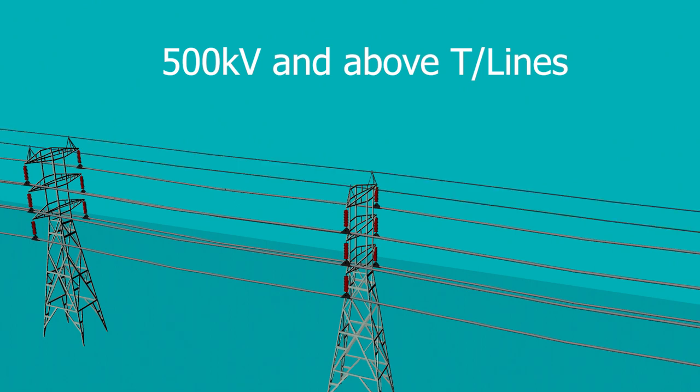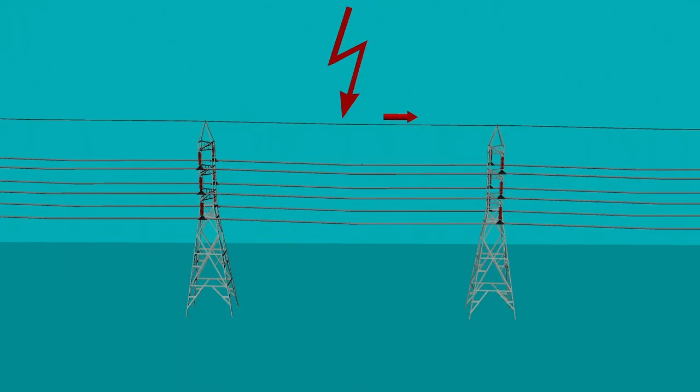Normally up to 220kV transmission line voltage levels there is a single earth wire used, while on 500kV and above voltage levels there are normally two earth wires installed on the towers.